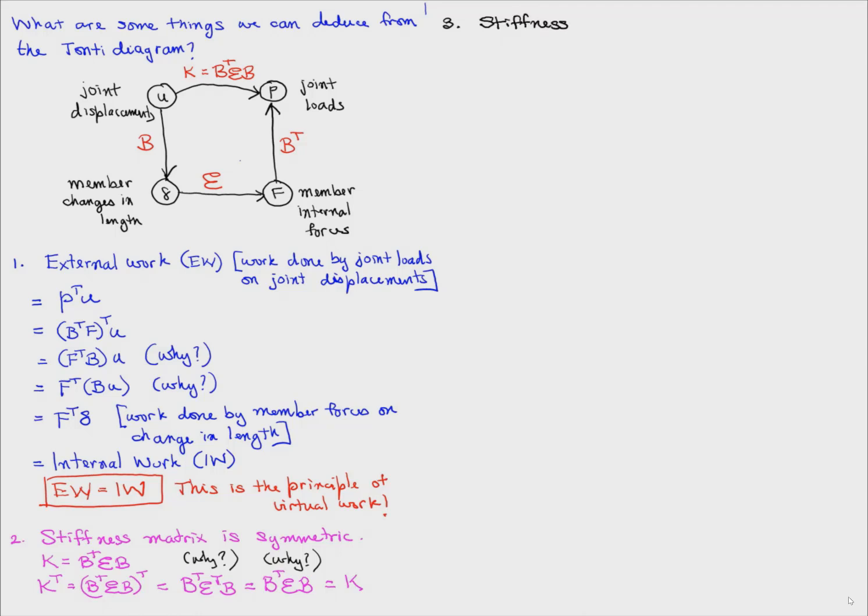Think about why some of these intermediate steps are true. The next fact is the stiffness matrix is positive definite. So let's take a u that's not equal to zero and do u transpose ku. That's equal to u transpose b transpose eb times u. That's bu the whole transpose e times bu. Again, why is that? We'll see later that bu is not equal to zero.